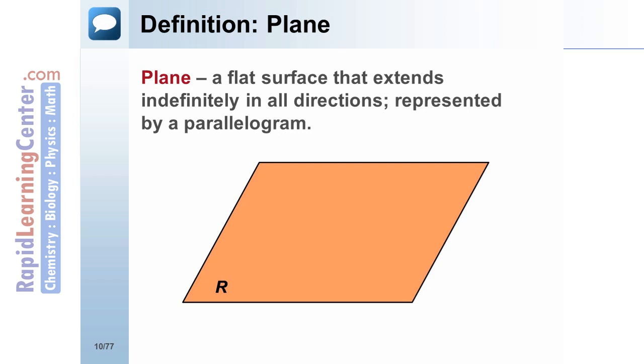Definition: Plane. A plane is a flat surface that extends indefinitely in all directions. It is typically represented by a parallelogram. The figure shows plane R.